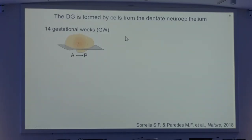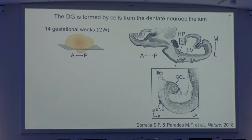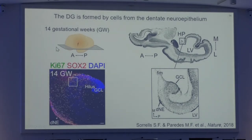You can see here how the human temporal lobe looks at gestational week 14. In a horizontal section, we see the lateral ventricle and the hippocampus. Looking in more detail, we have the dentate neuroepithelium down here and the forming granule cell layer up here. Staining an adjacent section for Ki67 and SOX2 to label dividing neural stem cells, we can see how these dividing neural precursors are continuously distributed all across this region at this age.